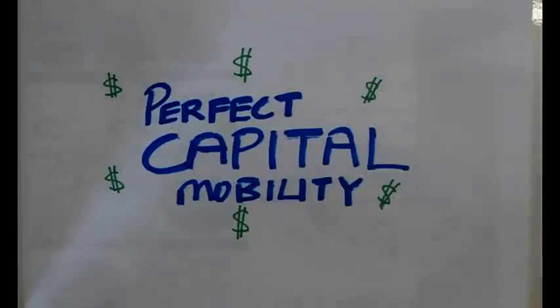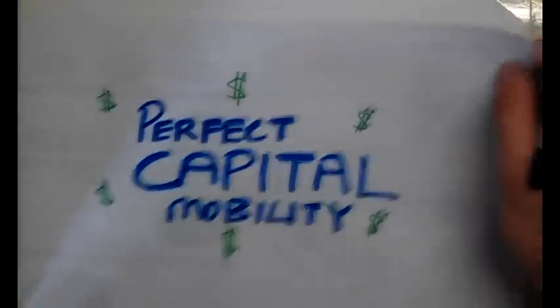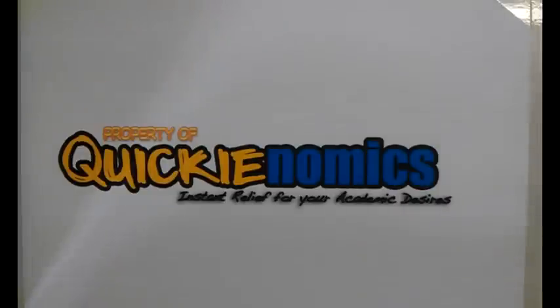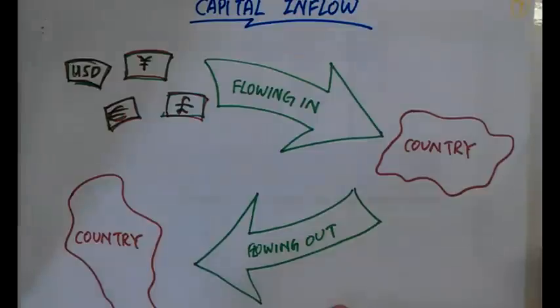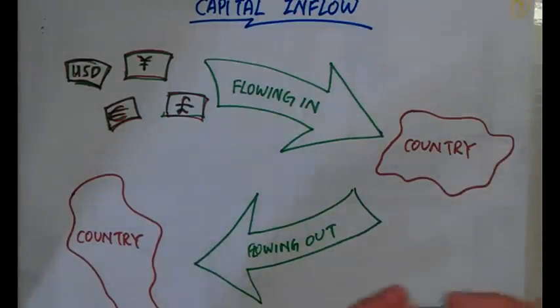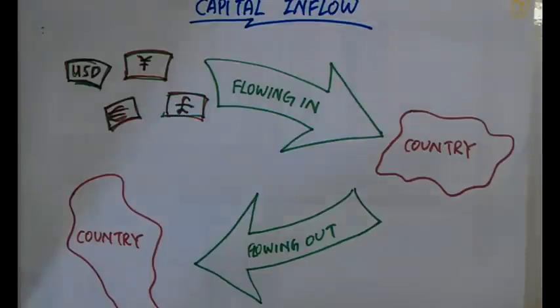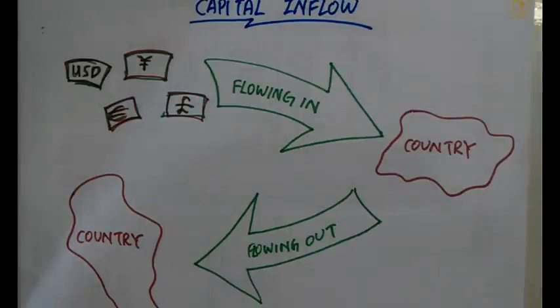Today's topic will be on perfect capital mobility — the next aspect of the open economy. Capital is basically money or currency that is flowing in and out of countries. Think about having a bunch of cash: if you put it in a bank, you earn interest. If another bank offers a higher interest rate, you'd take your money out and put it in the other bank instead.